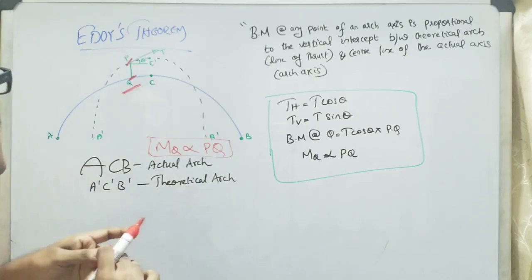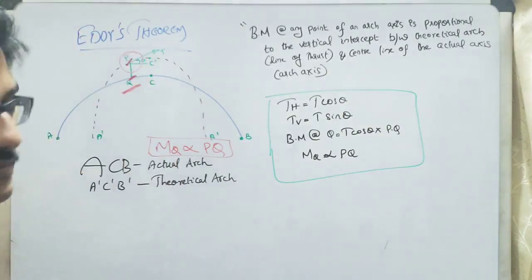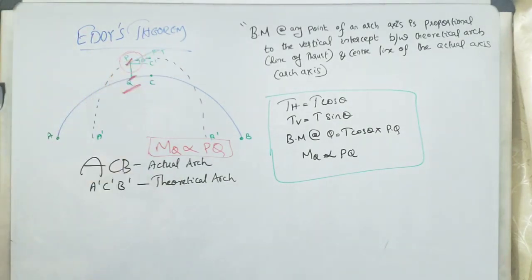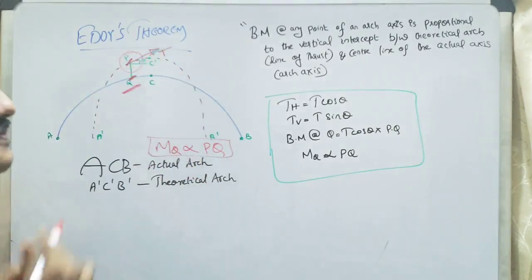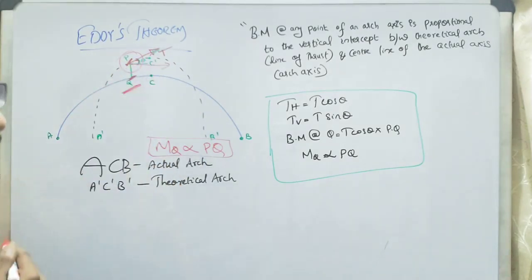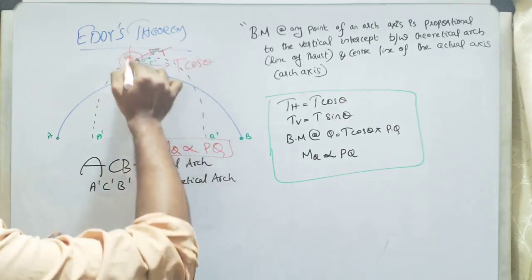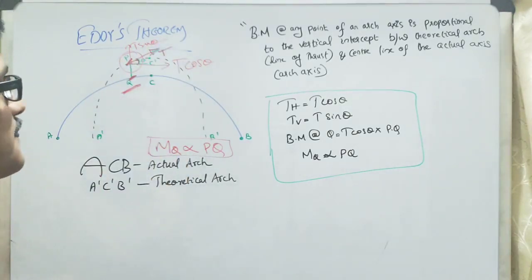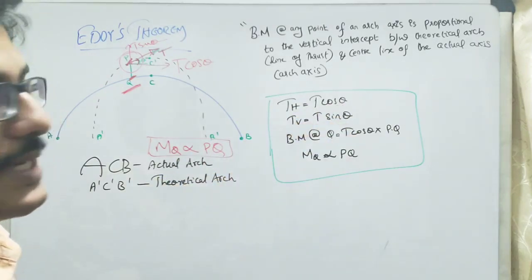Let us take the point P and consider the tangential forces acting. If we resolve this into two components, the angle is theta. So the horizontal component is T cos theta and the vertical component is T sin theta. These are the two components when the force T is split.